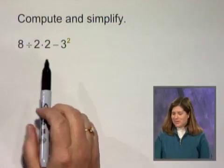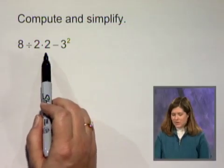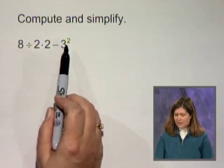In this exercise, we'll simplify an expression using order of operations. We're asked to compute and simplify 8 divided by 2 times 2 minus 3 squared.